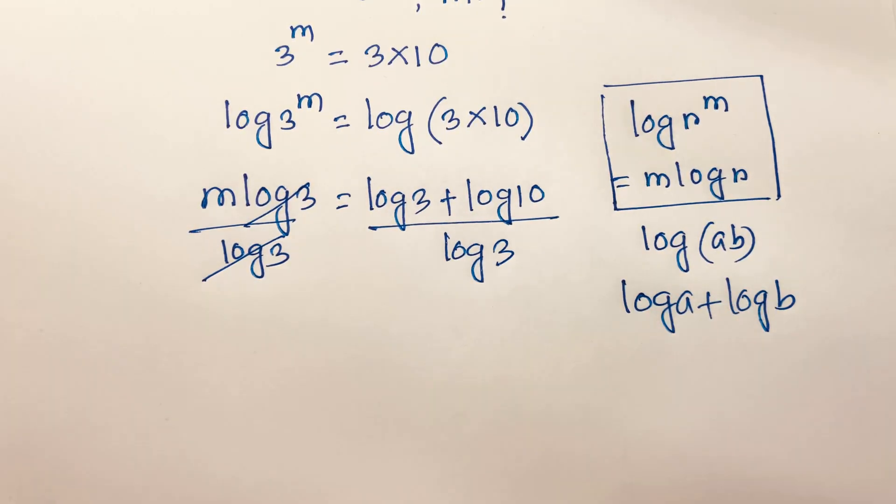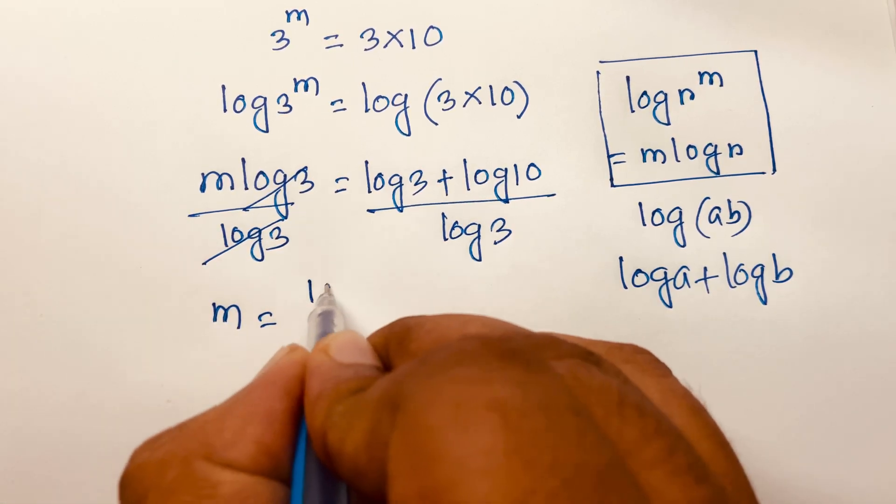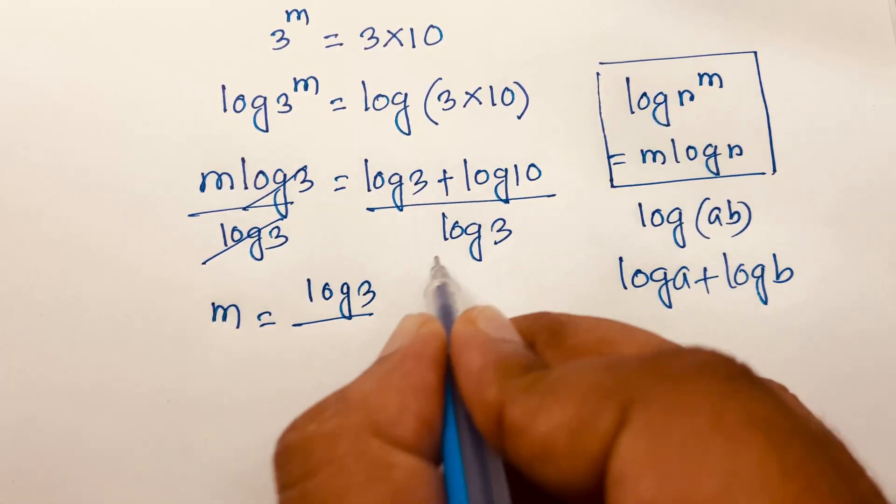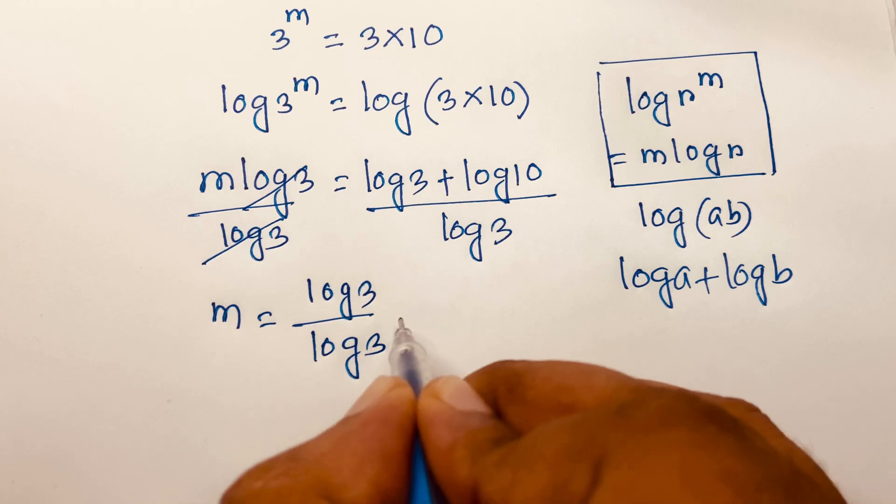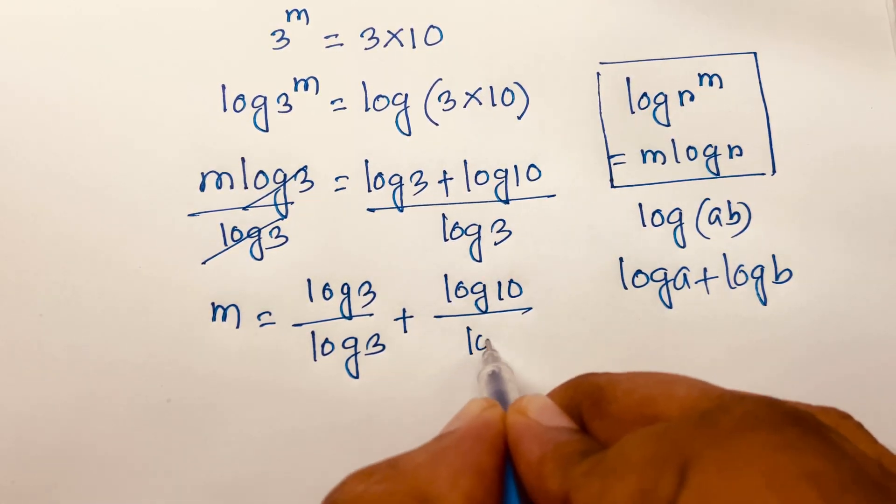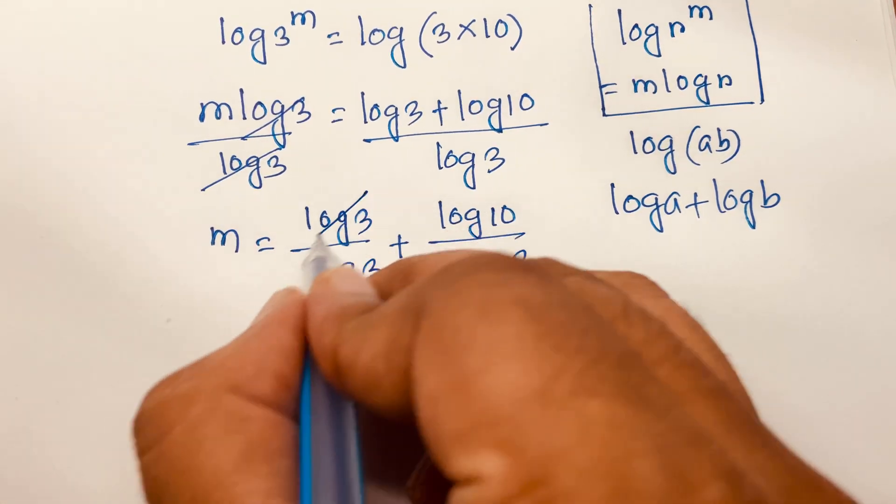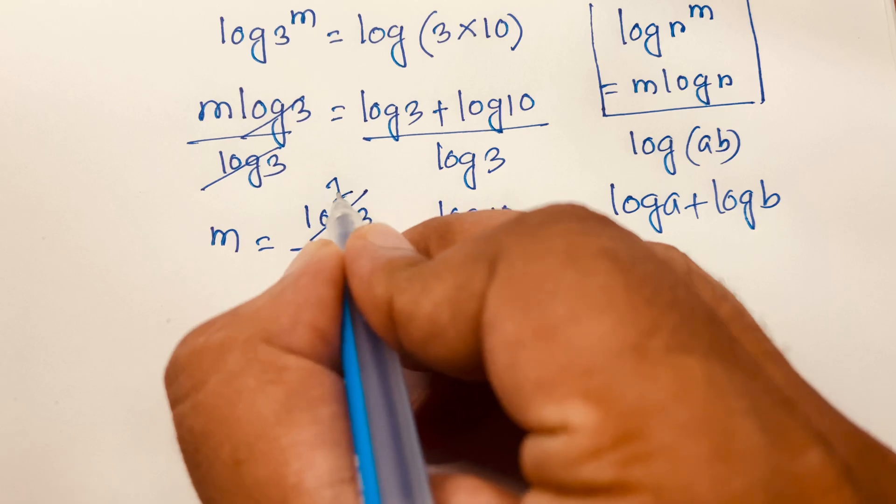The equation becomes m equals log 3 over log 3 plus log 10 over log 3. Here log 3 over log 3 cancels, so it will be 1.